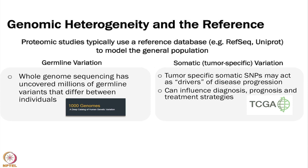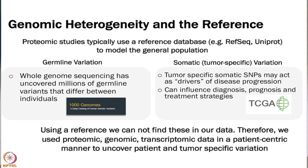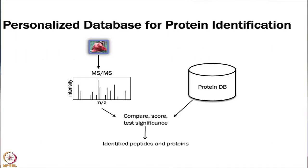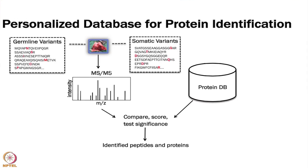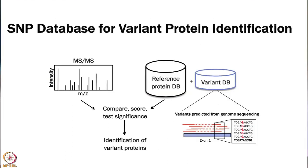If we model everyone using a reference database we are going to miss a lot of information. Also in cancer there are somatic mutations that occur just in the tumor. So if you are trying to measure proteins in a tumor and you do not include these somatic SNPs, you may actually miss those peptides. These are really interesting because many of them are very much involved in disease progression. If we use only a reference database, we cannot find these SNPs in our data — we really need to include them.